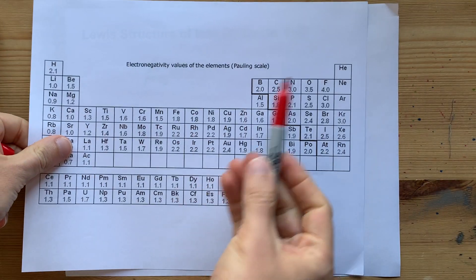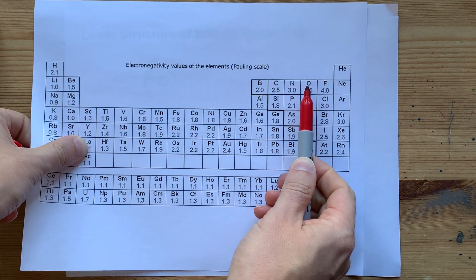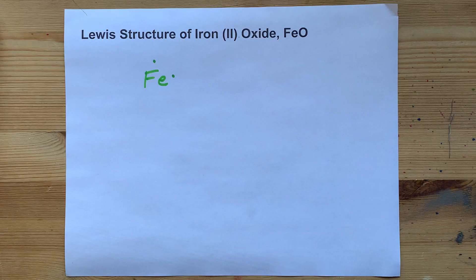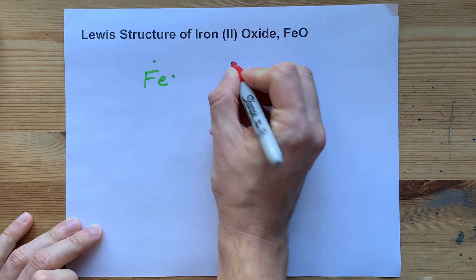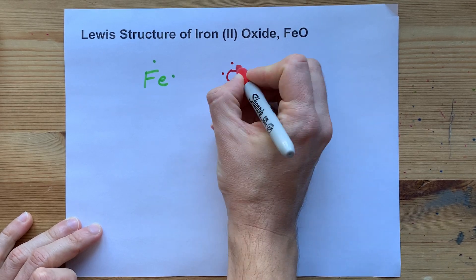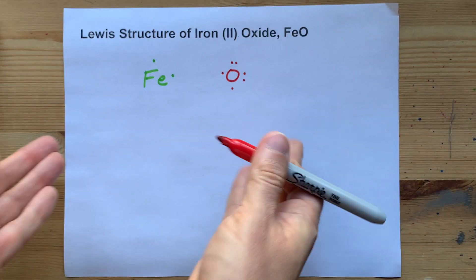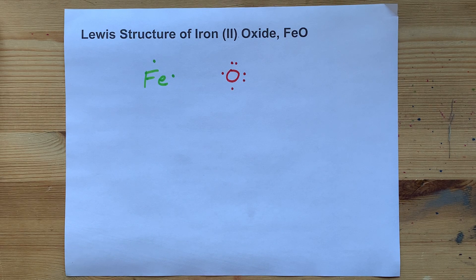Oxygen, on the other hand, is in group 16 of the periodic table. It is two electrons short of a full octet. It brings six valence electrons. One, two, three, four, five, six. It wants a full octet.